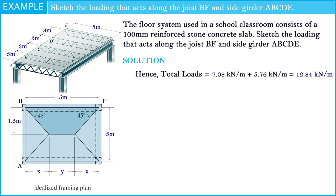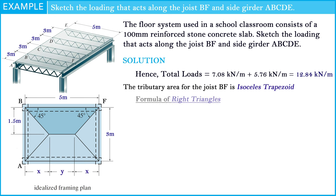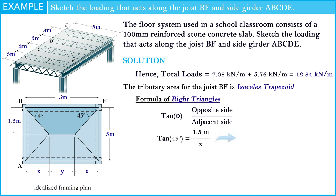The two-way slab distributes tributary area loads as shown in the picture. Due to the formula of right triangles, tangent of alpha is equal to the opposite side over the adjacent side. So the result of the x value is 1.5 meters, and the value of y is 2 meters.